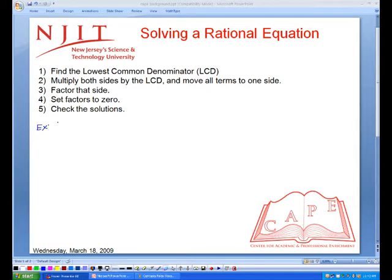So for example, say we have 1 over 6 plus 1 over x plus 1, which equals 1 over x. We first find the lowest common denominator, which is 6 times x plus 1 times x.